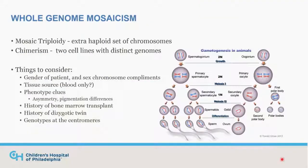Specifically, the types of whole genome mosaicism we'll be looking at are mosaic triploidy, where you have an extra haploid set of chromosomes, and chimerism, where you have two cell lines with distinct genomes. When a patient comes in, the things to consider include the gender of the patient, and because these involve a full set of different chromosomes, what is the sex chromosome complement in all of the cells, as this could have implications for your patient.